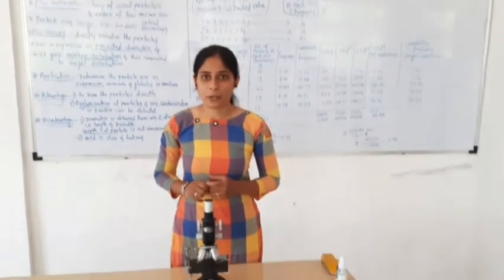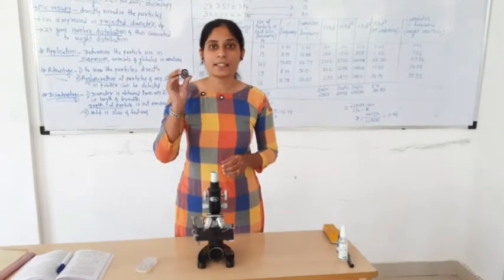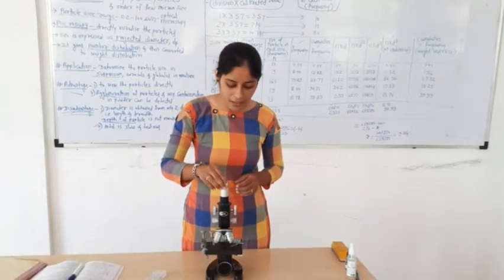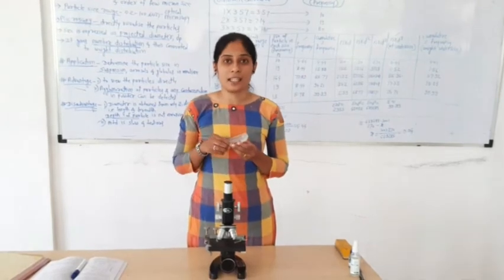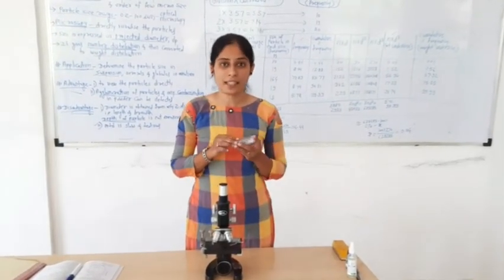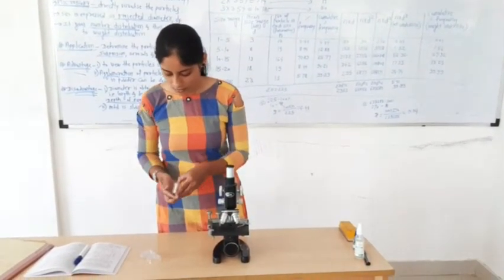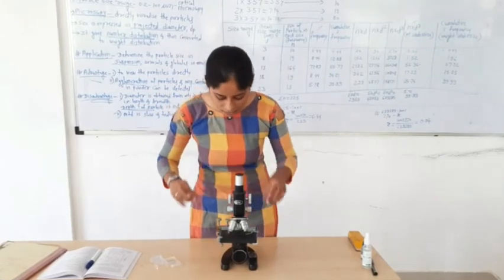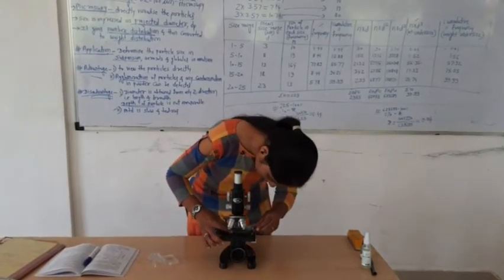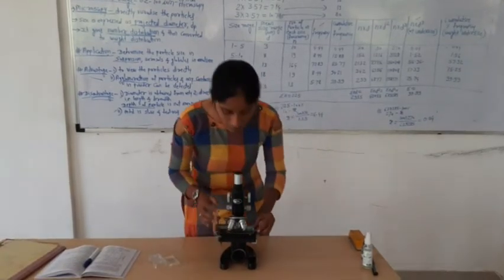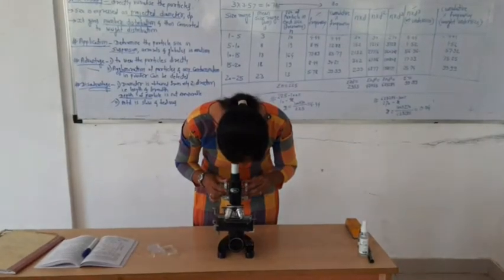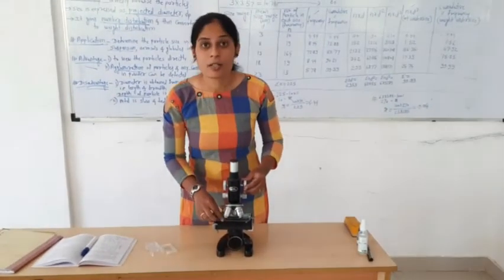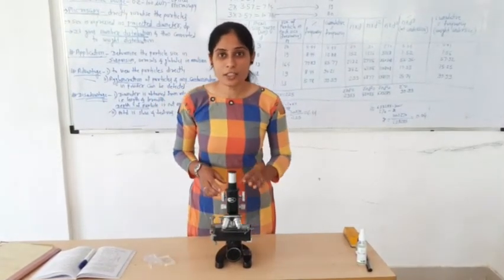For the calibration procedure of the eyepiece micrometer, we use the 10x eyepiece, which contains the eyepiece micrometer scale. We place the stage micrometer scale — which is a 1 millimeter scale — on the stage. The eyepiece micrometer scale is then coincided with the stage micrometer scale, and the calibration procedure is completed.